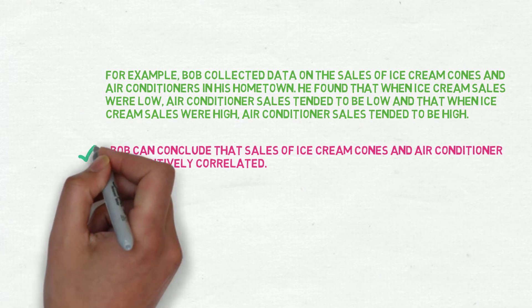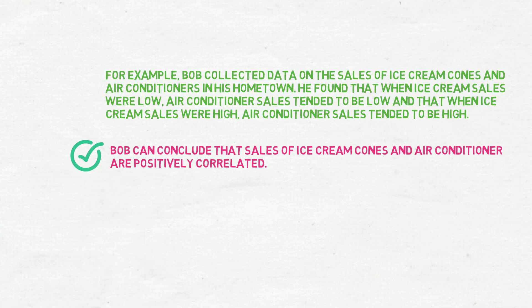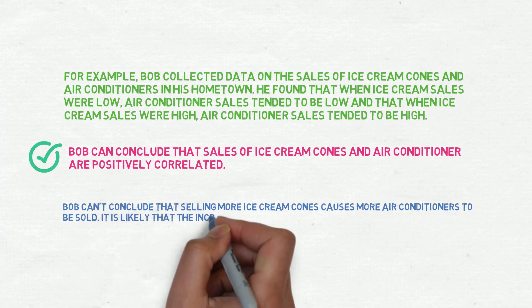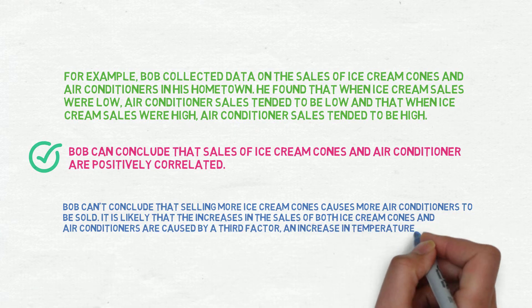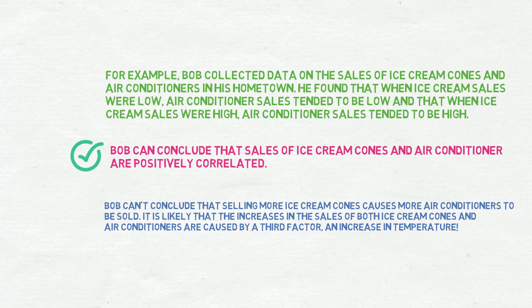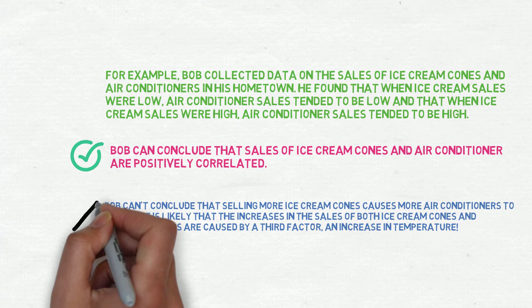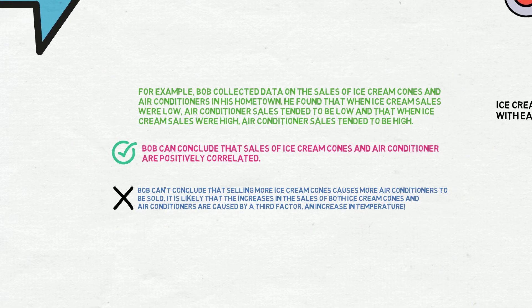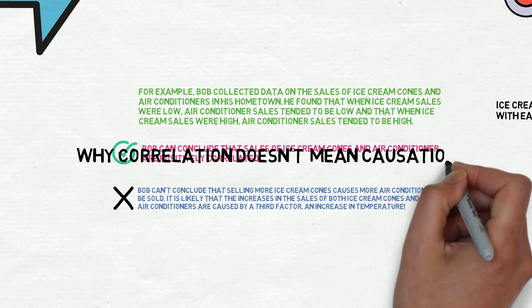But Bob can't conclude that selling more ice cream cones causes more air conditioners to be sold. It is likely that the increase in the sales of both ice cream and air conditioners is caused by a third factor: an increase in temperature. This is the reason why correlation doesn't mean causation.